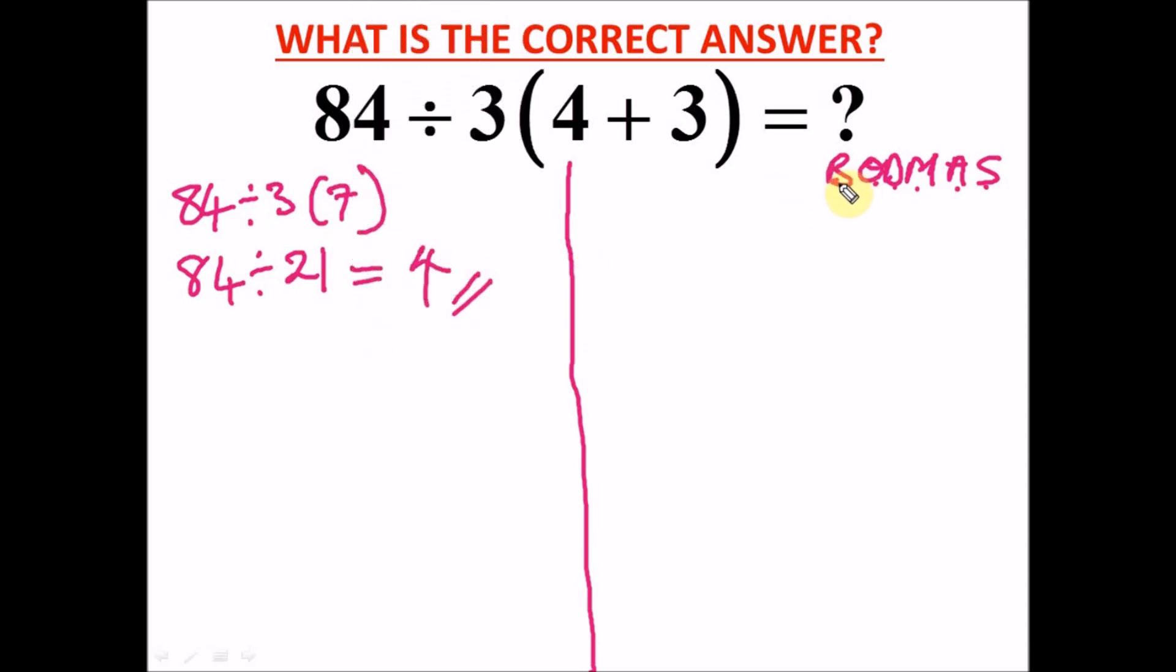The first thing first, yes, is the bracket. So we solve what's in the bracket. We have 84 divided by 3 brackets 4 plus 3, which is 7. Now the next thing, simplify what this means.